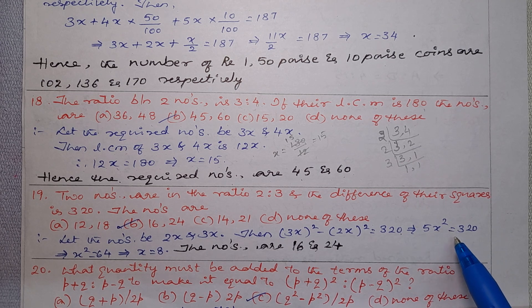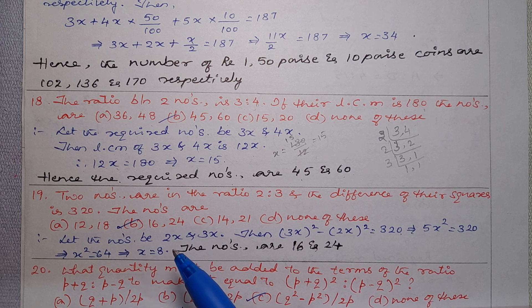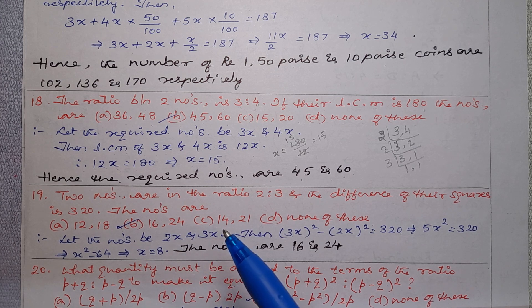Then x square equal to 320 divided by 5 is 64. Then we find x by taking the square root of 64. So square root of 64 is plus or minus 8.